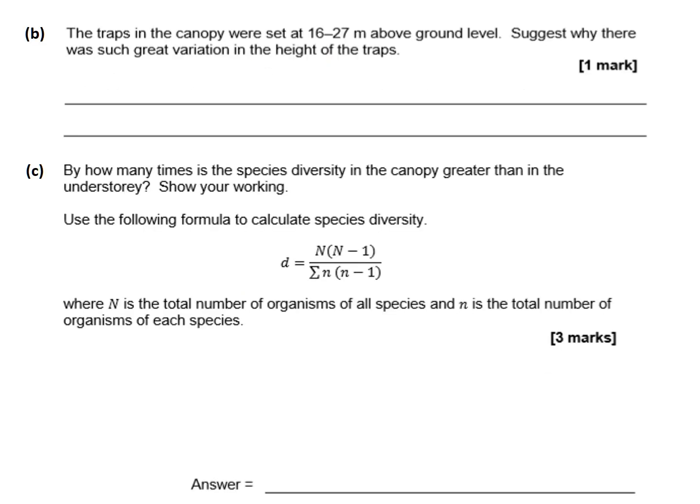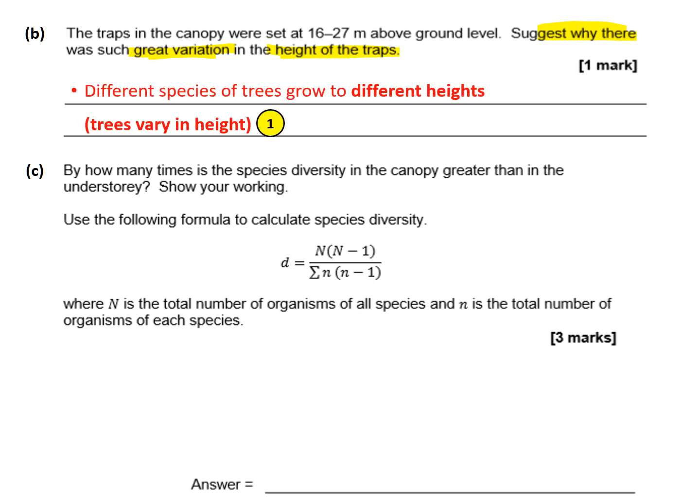Question b notes the canopy traps were set at 16 to 27 meters above ground level and asks us to suggest why there was such great variation in trap height. Looking at the mark scheme answer, it's fairly simple: at the 5 different sites, different species of trees may grow to different heights. It's sufficient to say trees grow to varying heights — for example, mature trees might grow slightly higher at one site. That gets us the 1 mark.